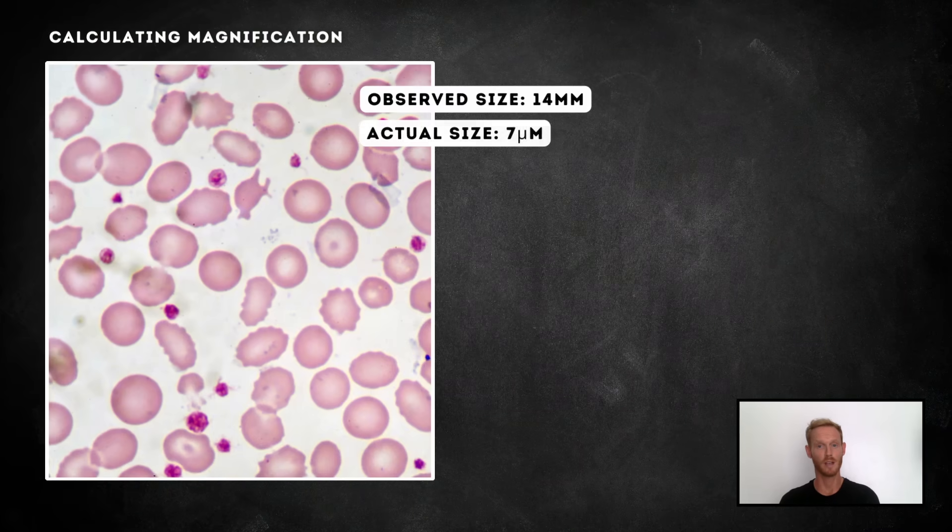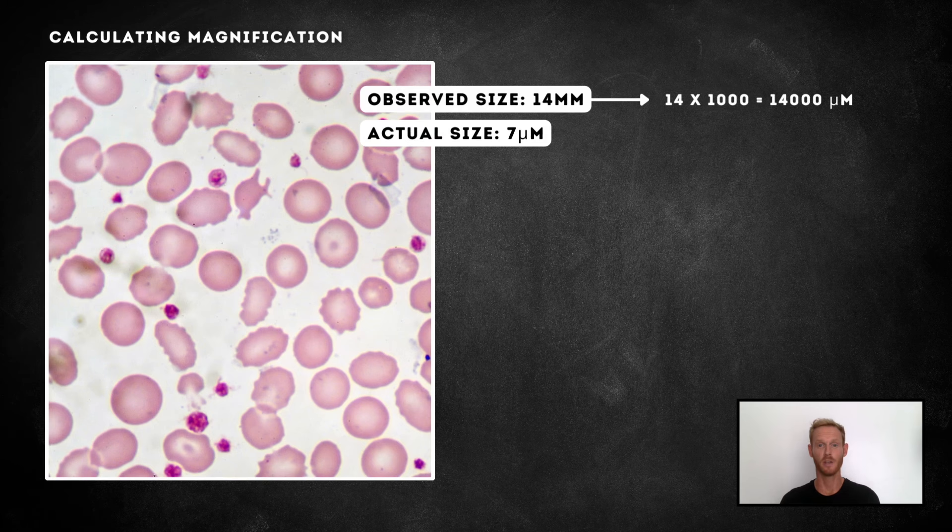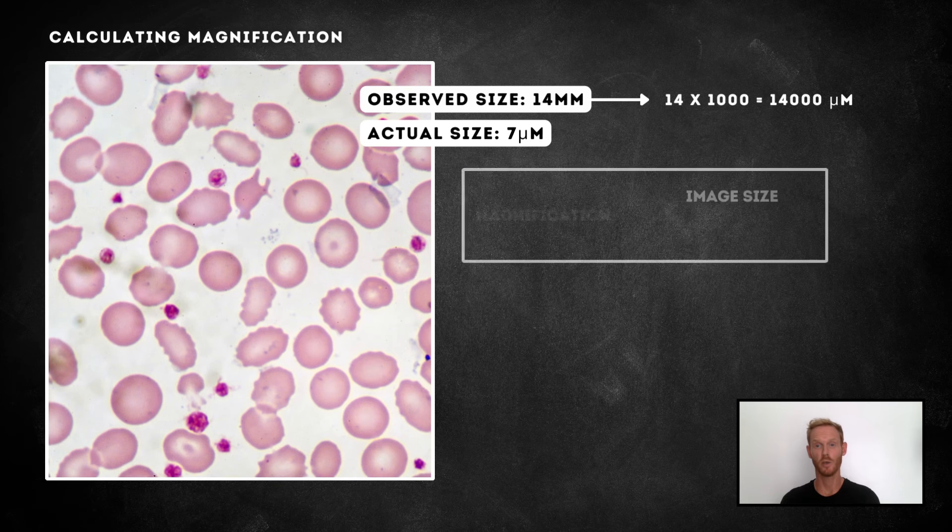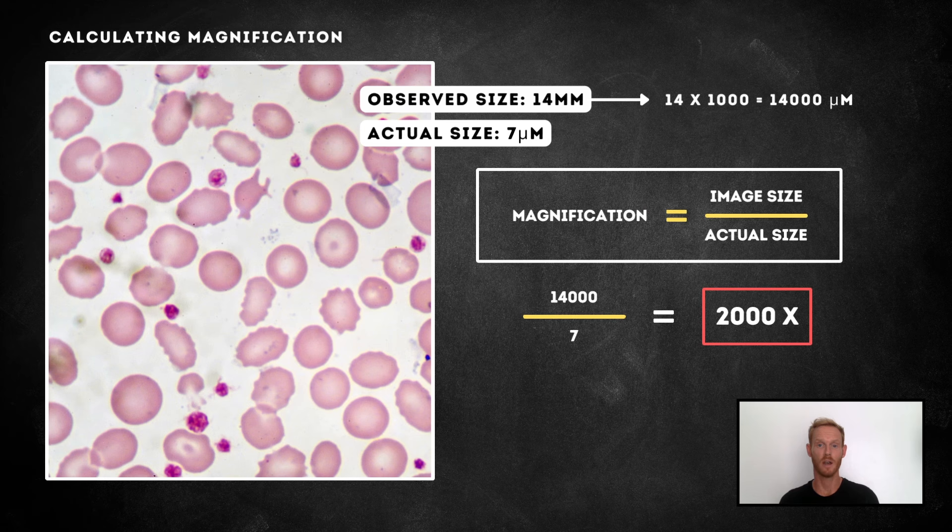Let's work through an example of an exam question involving micrometres. Just like before, you start by making sure that your units are the same for both sizes. So in this case, the observed size given in millimetres should be multiplied by 1000. Now that both sizes are in micrometres, you can input the figures into the equation and discover that a 2000 times magnification was used to generate this image.